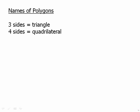So let's talk about the names of the polygons. Obviously if a polygon has three sides we call it a triangle. If it has four sides we call it a quadrilateral.